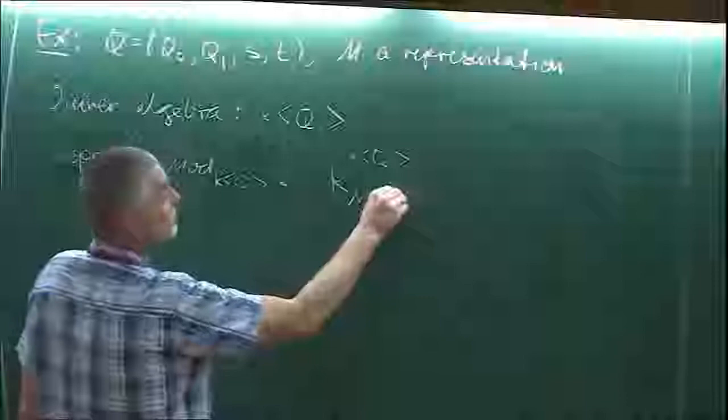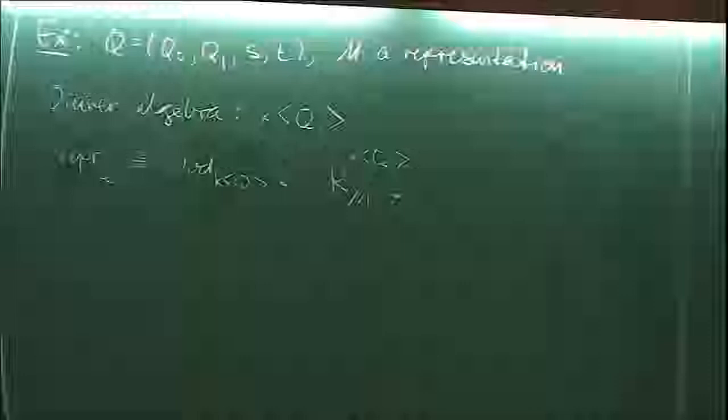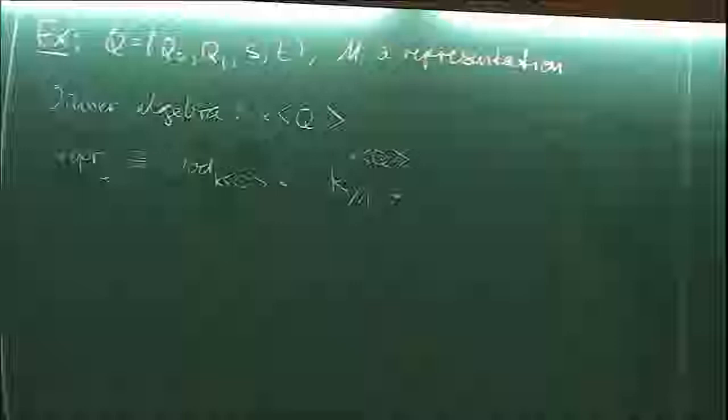When I compute a pro-representing hull of this one — call it R_M — as a KQ module, I get the local moduli of the set of all representations. So I say that I tell you everything at least locally around some representation. This is a very nice example: I have a unital non-commutative associative algebra and the representation is a representation of a quiver.